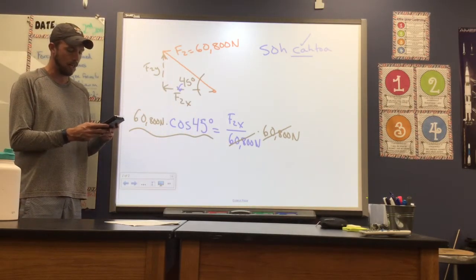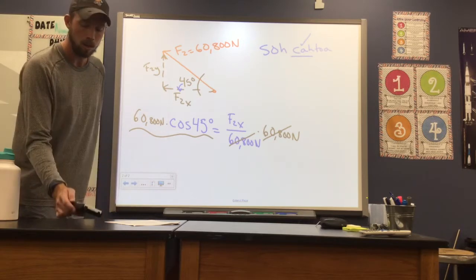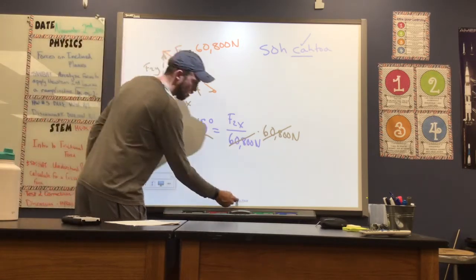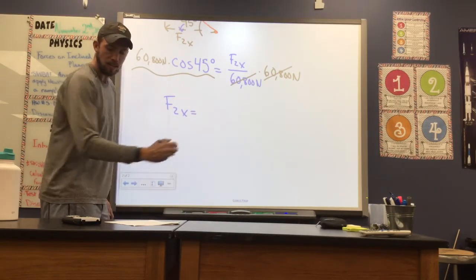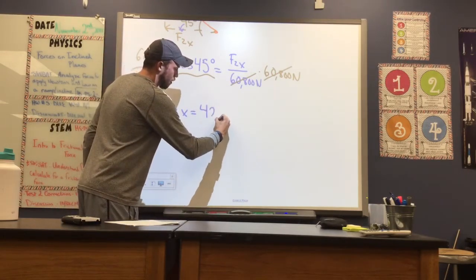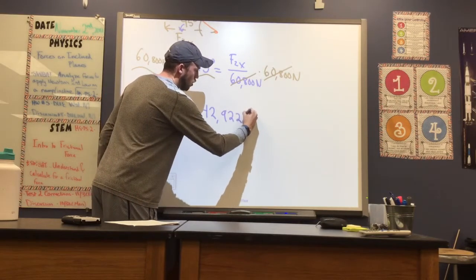60,800 times cosine of 45 degrees. So we'll take a moment, plug that in, make sure you're in degree mode, otherwise it's going to cause us some problems. So we'll get a value for F2 in the X that looks like this, about 42,922 newtons.